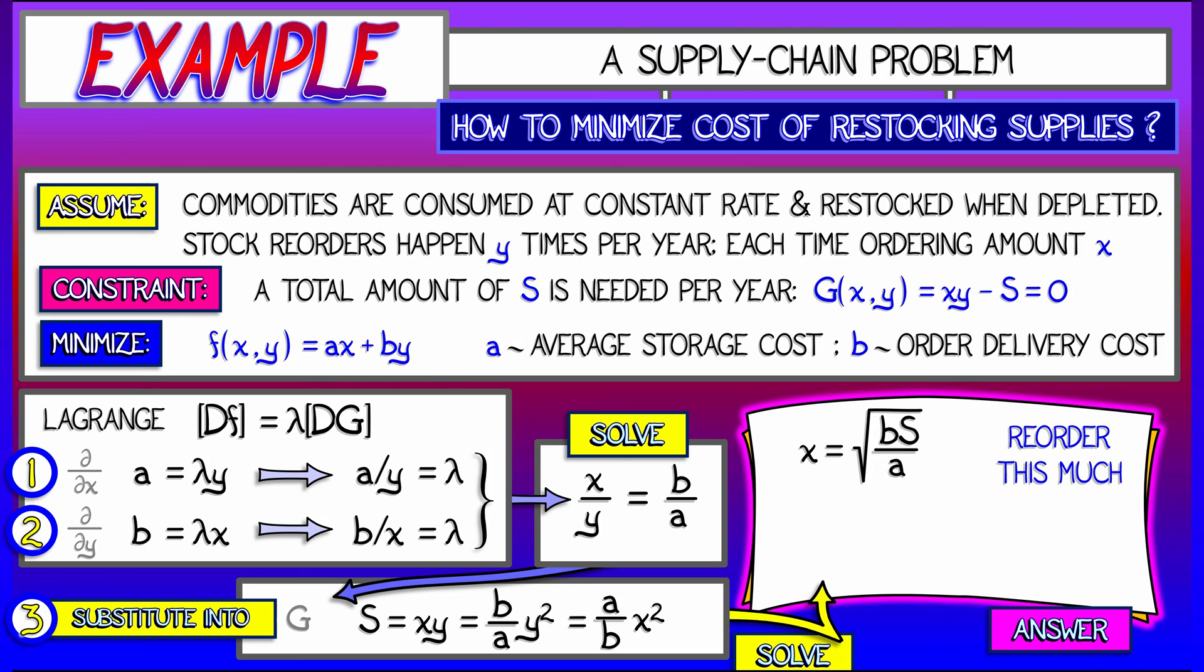That's how much you reorder every time. And y is equal to the square root of a times s over b. That's the frequency. That's how many times you should order per year.